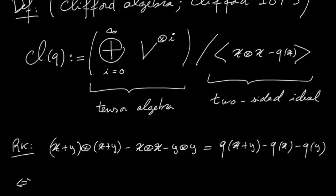And then the left-hand side is just, if you make a computation, it's X tensor Y plus Y tensor X. And on the right-hand side, this is the definition of our bilinear form associated to the quadratic form on the pair X, Y. So this is telling us that the anticommutativity of two elements is measured by this bilinear form.